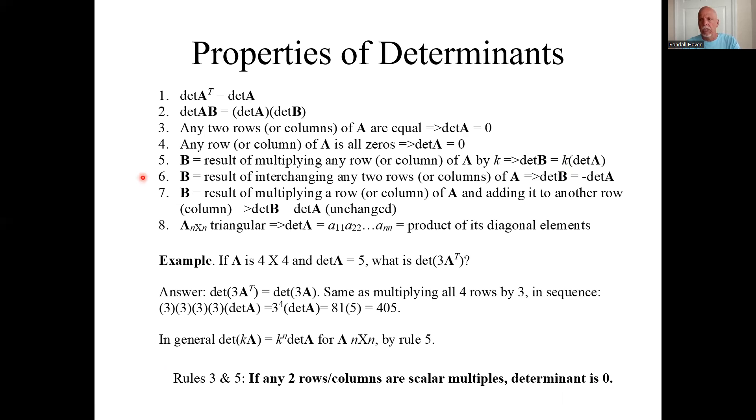If I just interchange any two rows or columns, negative, I just flip the sign of the answer. If I do this row or column operation of multiplying one row and adding it to another row, the determinant is unchanged.